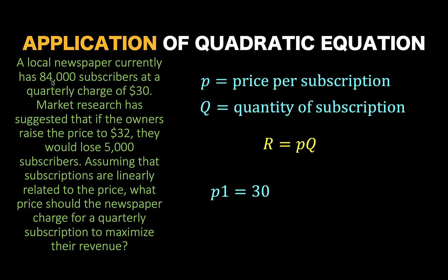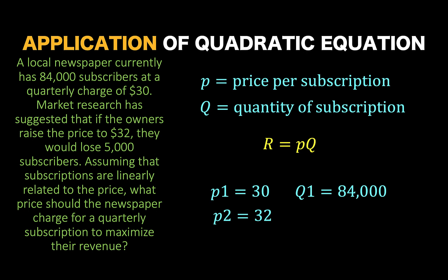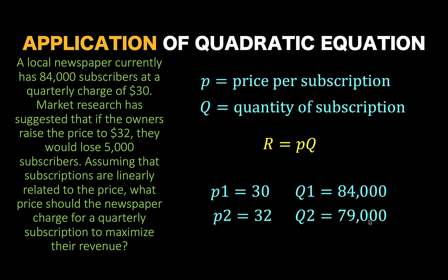According to the problem, when the price is equal to $30 — that's our P1 — the volume of subscription is 84,000, so our Q1 is 84,000. Then if the price is raised to $32, that is P2 equals 32, they would lose 5,000 subscribers. So from 84,000 subscribers, losing 5,000 of them would result in Q2 equals 79,000.